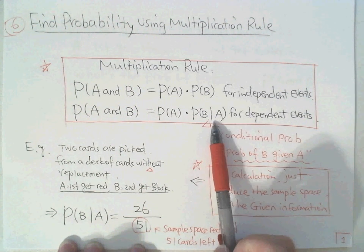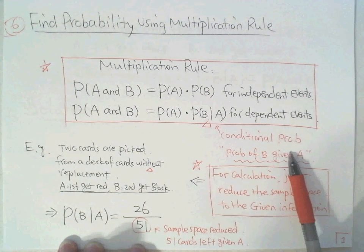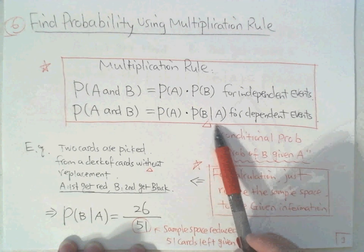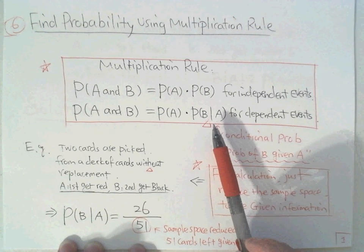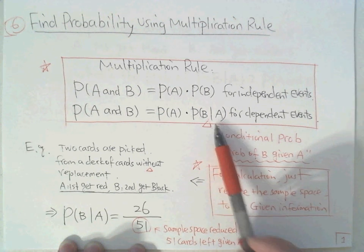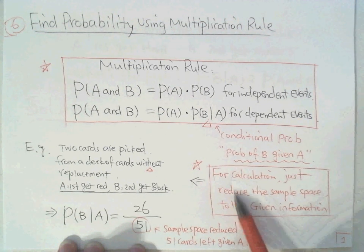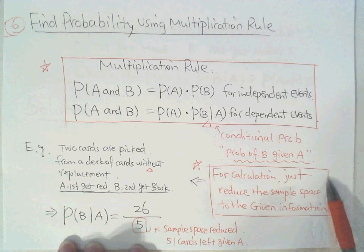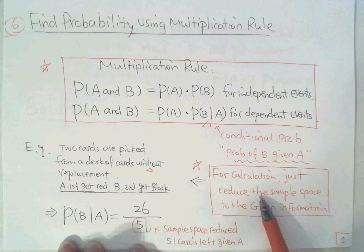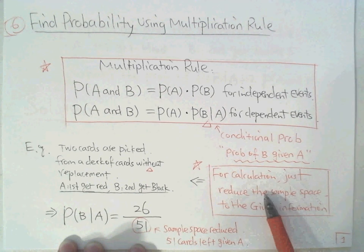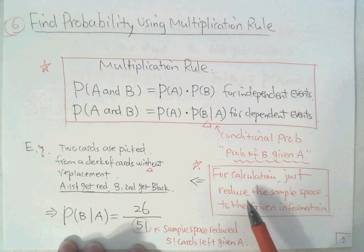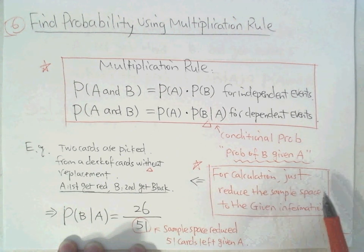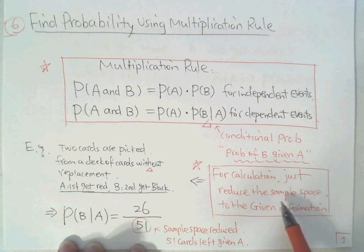How do you calculate conditional probability? The big idea is: you just reduce the sample space by the given information of A. Let's look at one example.